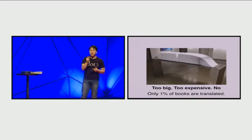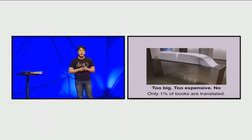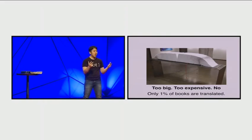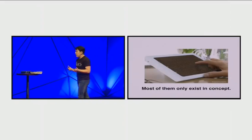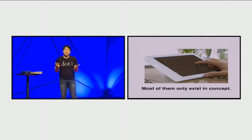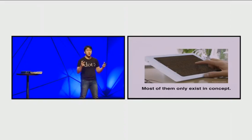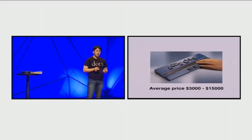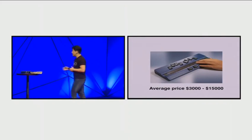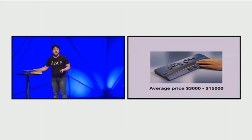Because it's too big, it's so expensive, and less than 1% of our books are translated into braille form. I thought there should be something like an iPad-type fancy device, a digitalized device. But most of them are only in concept. This was the device that's available—it's called a braille display. It looks a little bit bulky, and the average price of this device was $3,000 to $15,000.